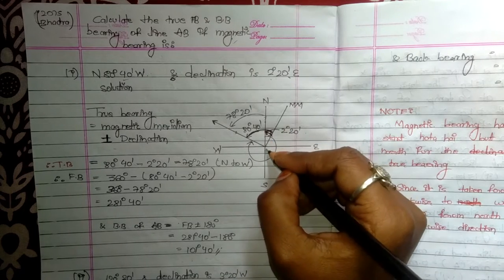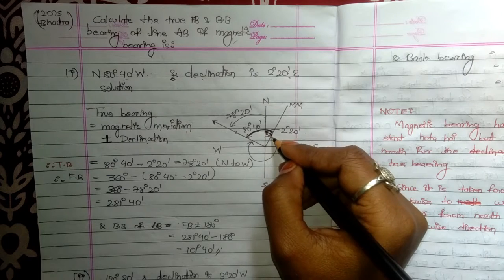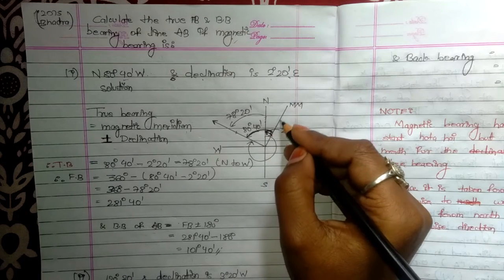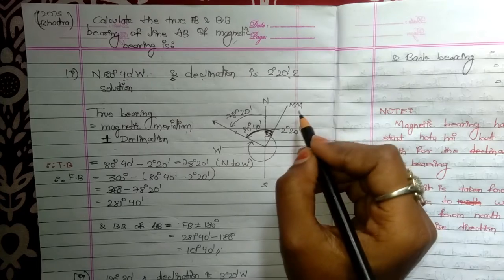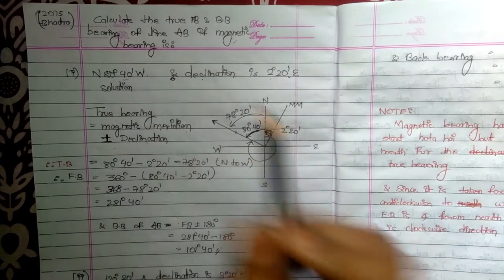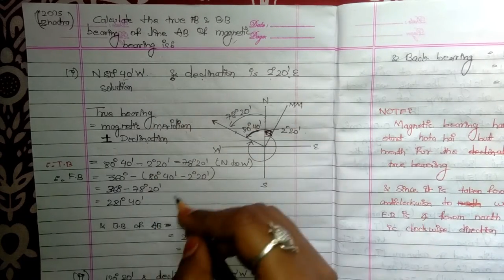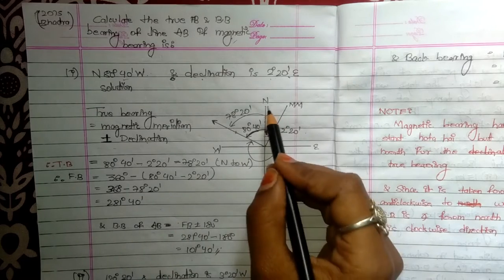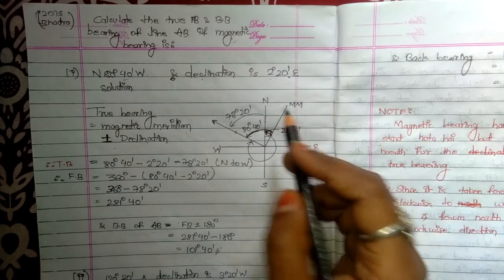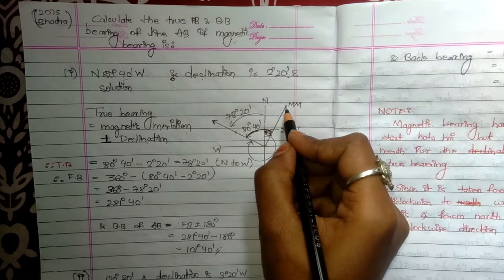When we make this angle and draw a line where this angle goes, that line is the magnetic meridian. We start magnetic bearing from the magnetic meridian, not from north. We always start magnetic bearing from the magnetic meridian.